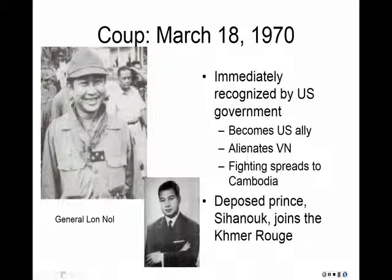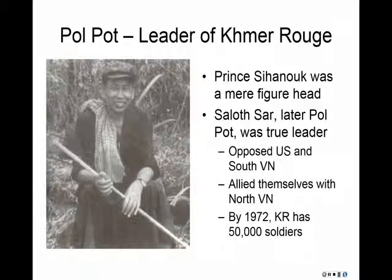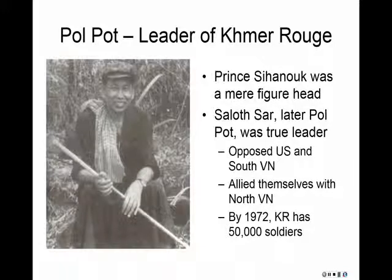The deposed prince then joins the Khmer Rouge. The leader of the Khmer Rouge, because the prince was a mere figurehead, is the individual we know as Pol Pot — his real name is Saloth Sar. He opposes the United States and the U.S. presence in South Vietnam, and allies himself with North Vietnam, helping to supply the VC in South Vietnam. In a mere several years, the Khmer Rouge now had 50,000 soldiers.